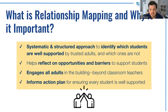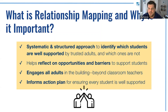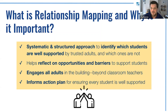Let me introduce you to the concept of relationship mapping. At a very basic level, the idea of relationship mapping is to find an engagement process with all the adults in the building that allows you to, in a more systemic and structured way, ensure that every single student has a meaningful relationship with at least one adult.